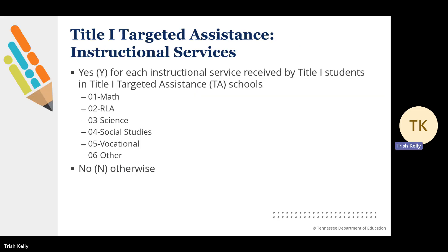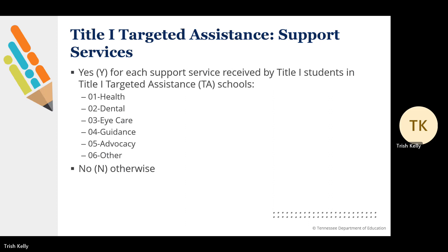As a reminder, there are six codes for Title I targeted assistance instructional services: 01 Math, 02 Reading and Language Arts, 03 Science, 04 Social Studies, 05 Vocational, and 06 Other — N for all students not receiving those services. Similarly, there are six Title I targeted assistance support service codes: 01 Health, 02 Dental, 03 Eye Care, 04 Guidance, 05 Advocacy, and 06 Other — N otherwise.